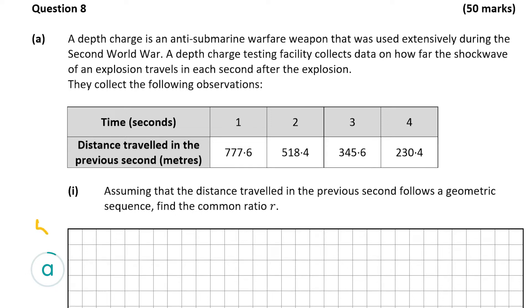Part a1 is worth 5 marks. It says, assuming that the distance traveled in the previous second follows a geometric sequence, find the common ratio r. The common ratio is just the ratio between two consecutive terms, so to find that you divide one term by the term that directly precedes it. So r equals t2 divided by t1, which equals t3 divided by t2, and so on.